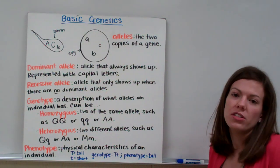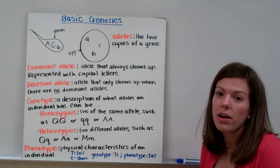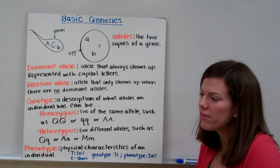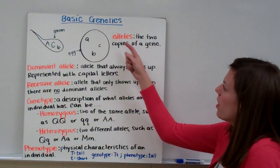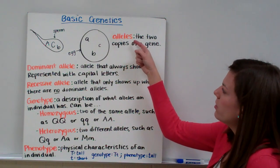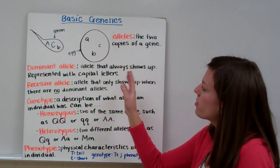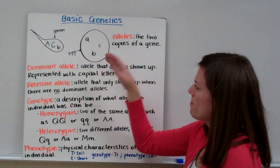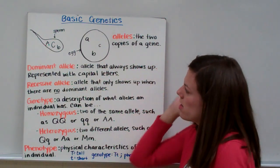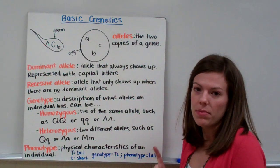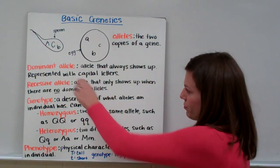For each of the genes in your body, you have two copies. Those two copies are called alleles. We have a rough sketch of a sperm and an egg. Let's say we have gene A, gene B, and gene C.